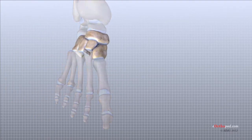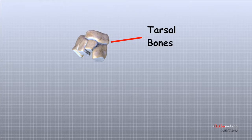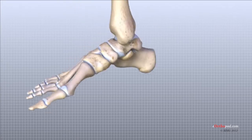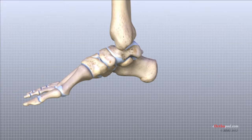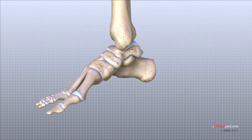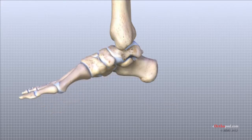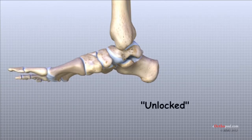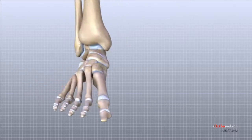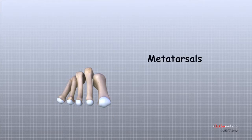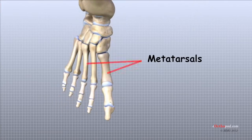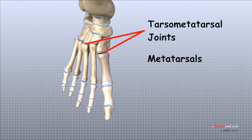The hind foot is connected to a set of five tarsal bones that work together as a group. These bones are unique in the way they fit together, with multiple joints between them. When the foot is twisted in one direction by the muscles of the foot and leg, these bones lock together and form a very rigid structure. When twisted in the opposite direction, they become unlocked and allow the foot to conform to whatever surface it is contacting. The tarsal bones are connected to five long bones of the foot called the metatarsals, with fairly rigid connections and not much movement at the joints.